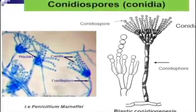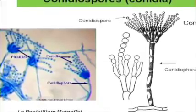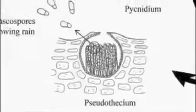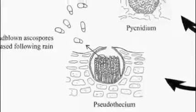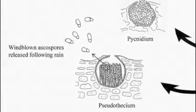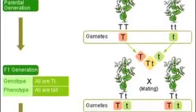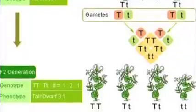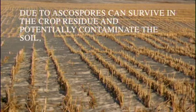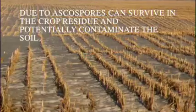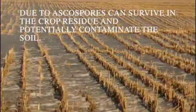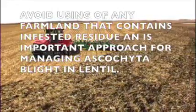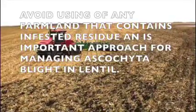Ascochyta lentis will produce conidia to release conidial spores. In addition, this pathogen may also overwinter as pseudothecia on plant residues, and then release ascospores when conditions are favorable. This reproduction cycle enhances the genotypic diversity of the pathogen and will result in more evolutionary advantages. Due to ascospores surviving in the crop residue for a long period of time and potentially contaminating the soil, avoiding farmland that may contain infected crop residue is an important approach for managing Ascochyta blight in lentils.